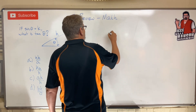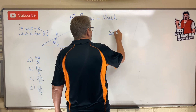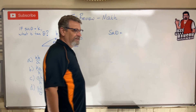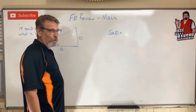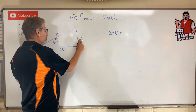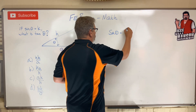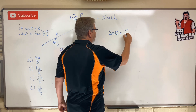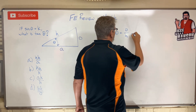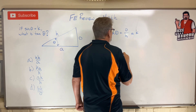Okay, the sine of theta — SOH-CAH-TOA — is equal to opposite over hypotenuse, right? O over H. Okay, which means that all of that also has to be equal to k.